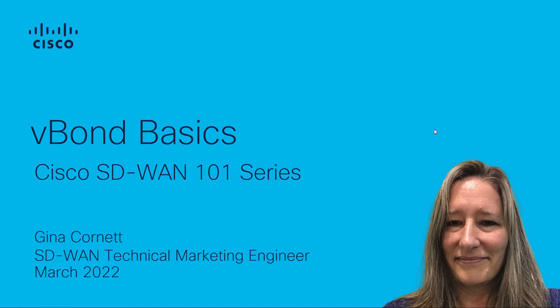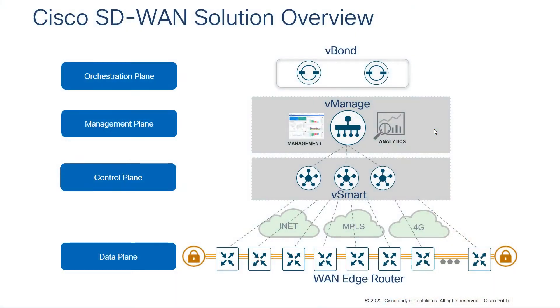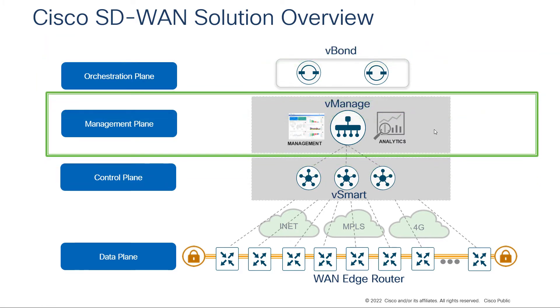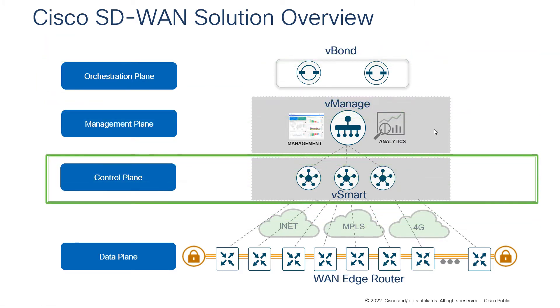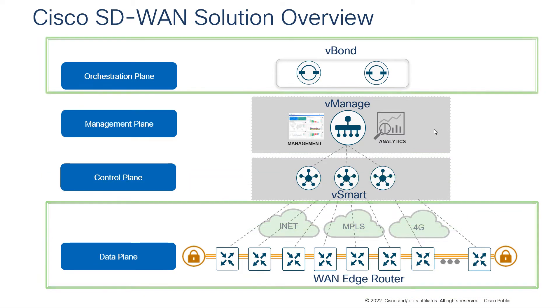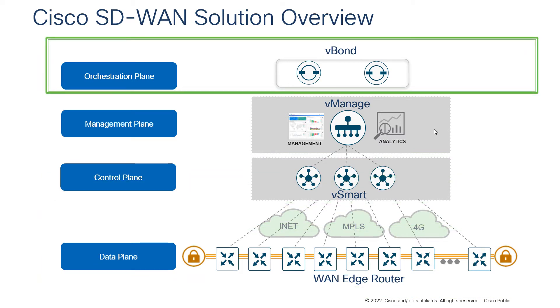Hello, my name is Gina Cornett and I'm a technical marketing engineer for the Cisco SD-WAN product. In this video we will talk about the role that the V-BON controller plays in the Cisco SD-WAN network. The Cisco SD-WAN solution is divided up into several different planes: the orchestration plane, the management plane, the control plane, and the data plane. Today we're going to be focusing on the V-BON orchestrator, which makes up the orchestration plane.